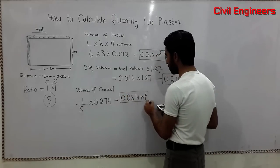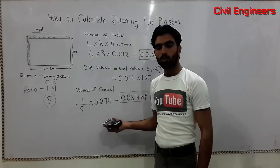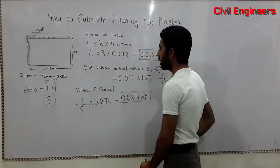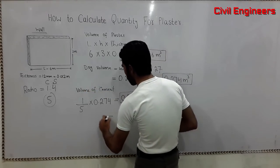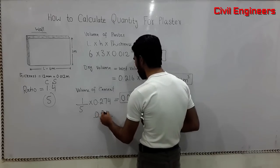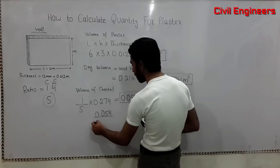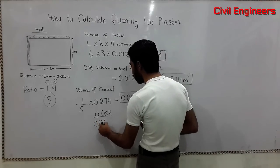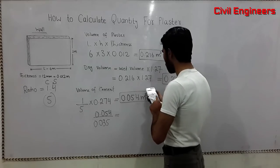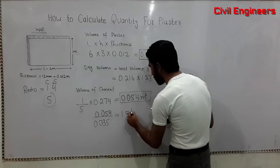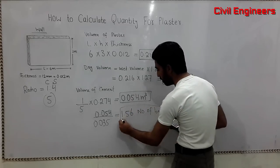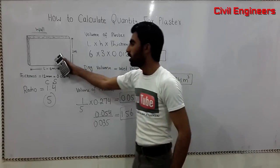Now I want to convert this volume to bags of cement — how many bags are required for this plaster. For that, I need to divide the volume of cement by the volume of one bag, which is 0.035 cubic meters. So 0.054 divided by 0.035 equals 1.54 — approximately 1.54 bags of cement are required for this plaster.